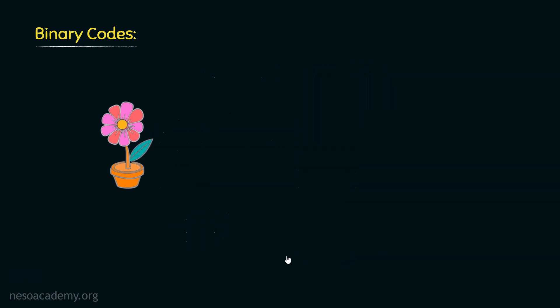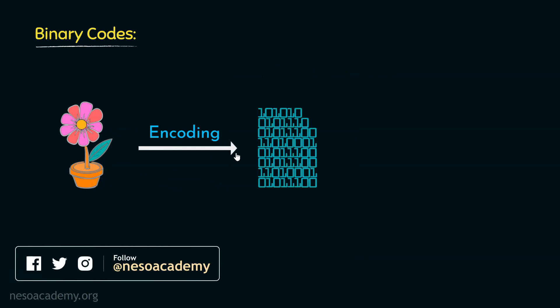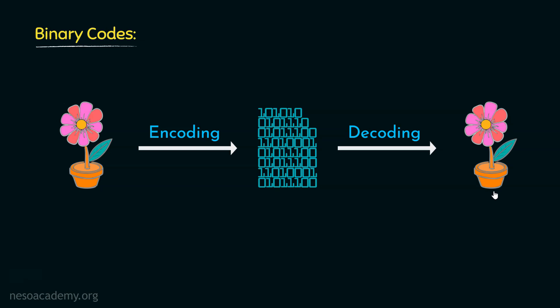So basically what happens, there is an information, we use encoding so that we can convert that information into a sequence of 1s and 0s. And this sequence of 1s and 0s is stored into the computer. Now, if we want to retrieve that information, all we have to do is perform decoding and thereafter we will observe the information again. The process of encoding and decoding is carried out using binary codes.